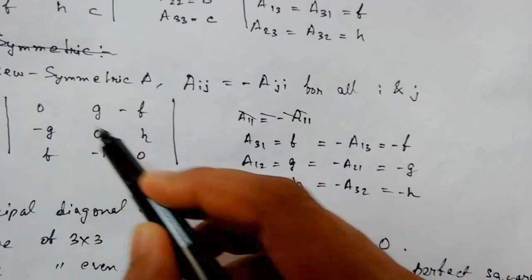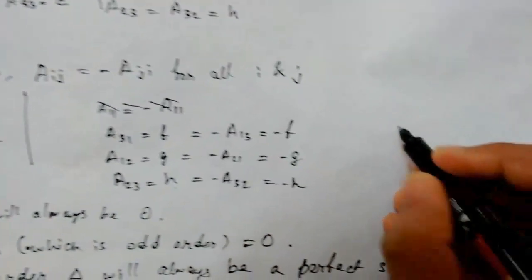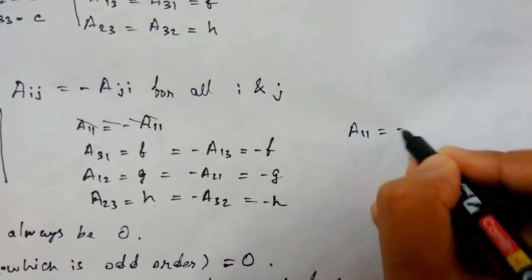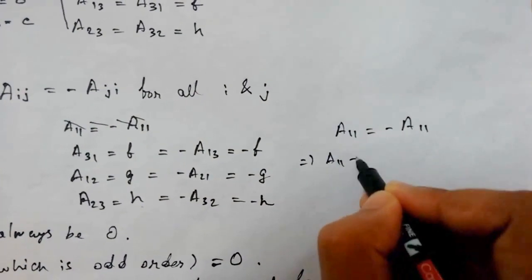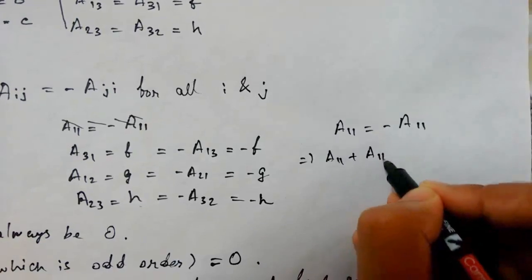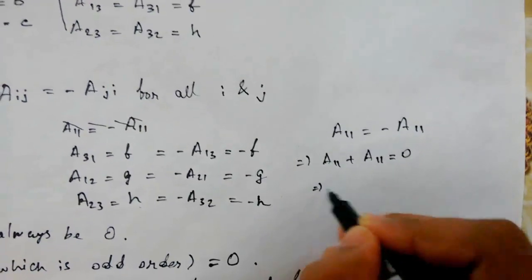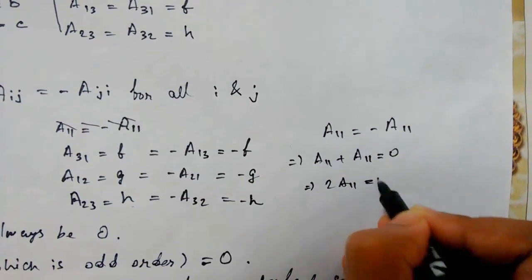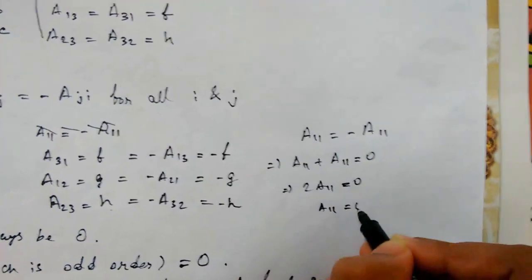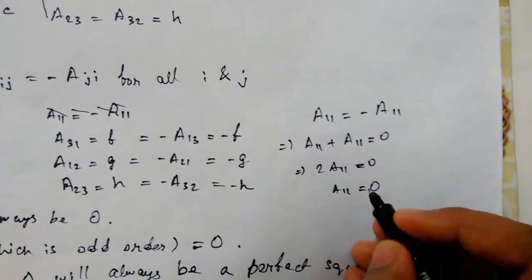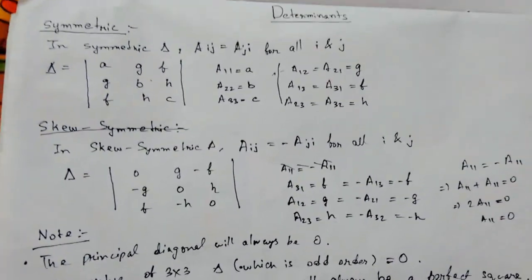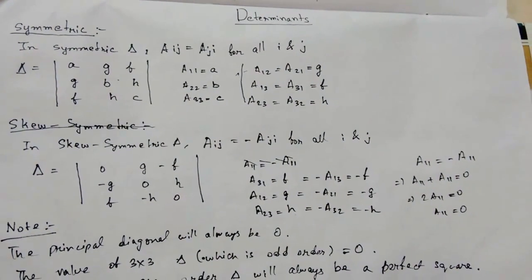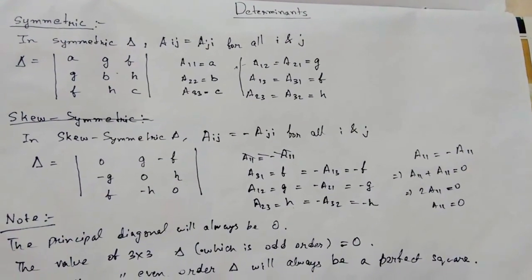Let me show you why the principal diagonal element is zero. Suppose a11 equals minus a11. This gives a11 plus a11 equals 0, so 2·a11 equals 0, therefore a11 equals 0. Similarly we can do this for a22 and a33. If you have any problems, comment below, and if you liked my video, subscribe to my channel for more videos. Thank you.